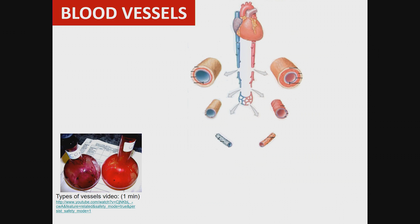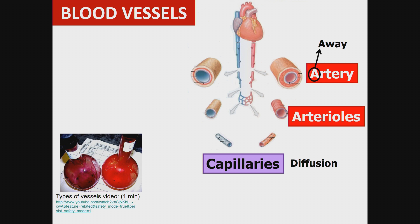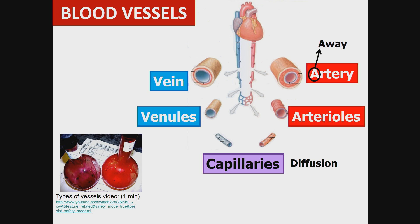Starting with the heart, the biggest vessels leading away from the heart are the arteries. We'll remember that they are 'away' by saying A stands for away. Arteries lead into arterioles, which lead to capillaries where diffusion of gases occurs, then venules, and finally veins.